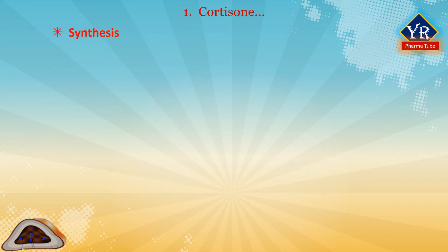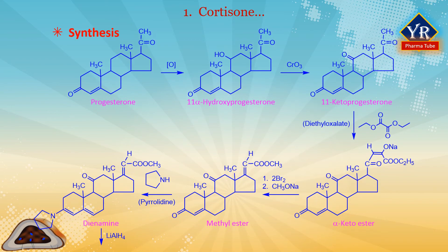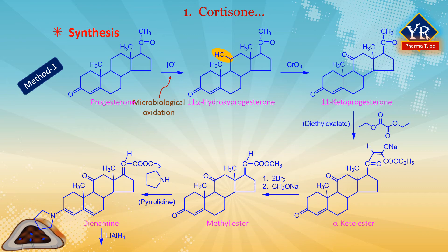Synthesis of cortisone. Cortisone is synthesized in various methods from compounds already having the steroid skeleton. The first method involves synthesis from progesterone, which undergoes microbiological oxidation forming 11-alpha-hydroxyprogesterone. The hydroxyl group of this compound is oxidized to a keto group by chromium oxide in acetic acid, giving 11-ketoprogesterone. This is reacted with diethyl oxalate in the presence of sodium ethoxide, forming the corresponding alpha-keto ester in the form of a sodium enolate, which undergoes bromination with two equivalents of bromine giving a dibromo ketone.